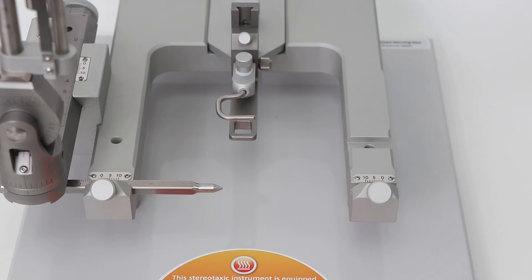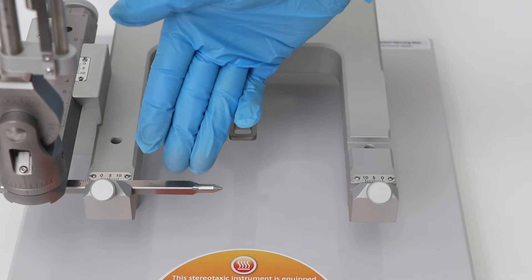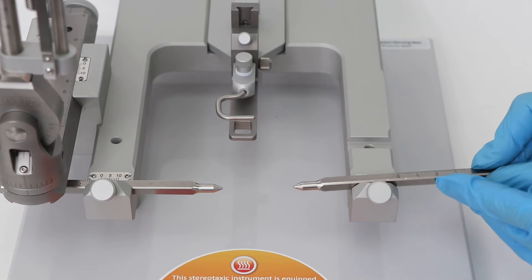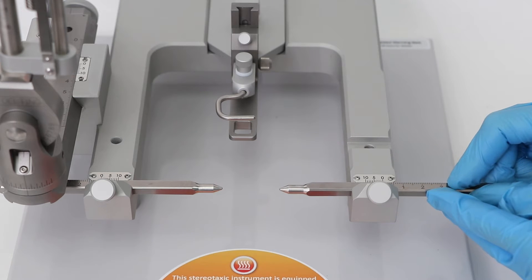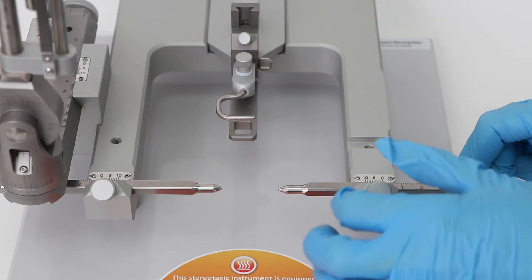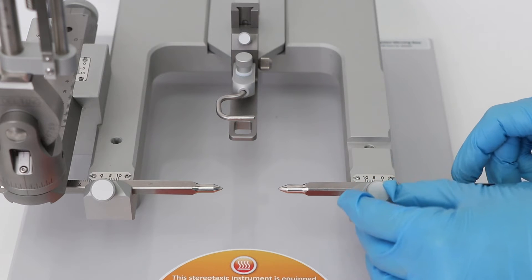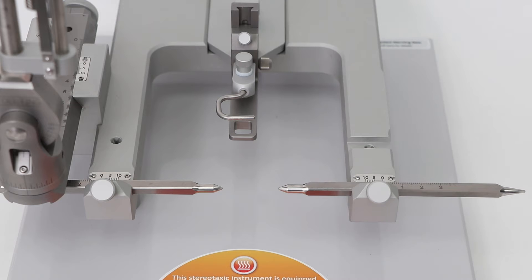For surgical applications using a rat, attach metal ear bars here and here. Do not over tighten them as these will require adjusting to situate the animal properly. Only fully tighten them once the animal is in position.